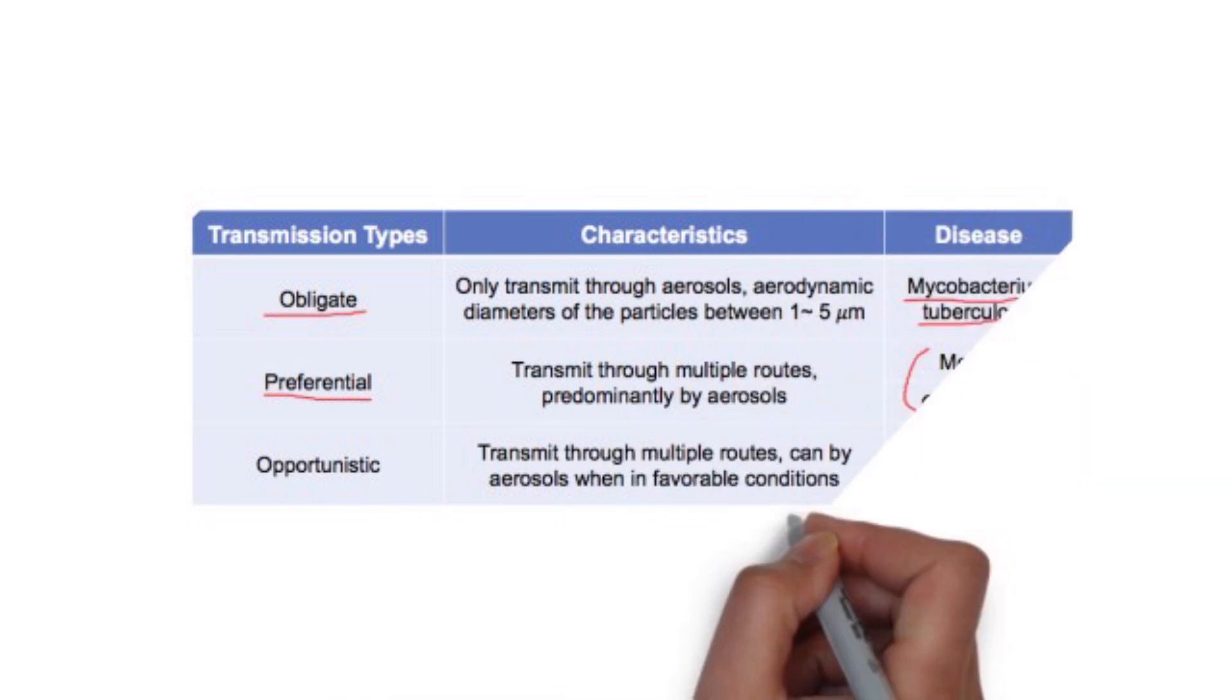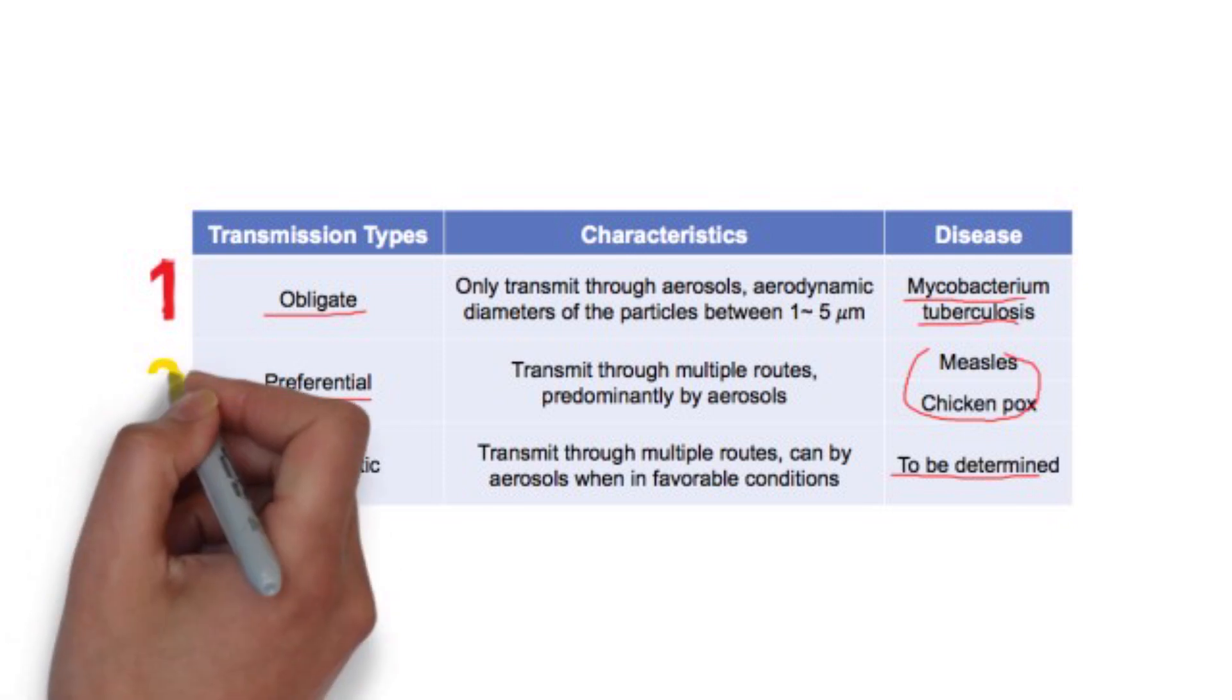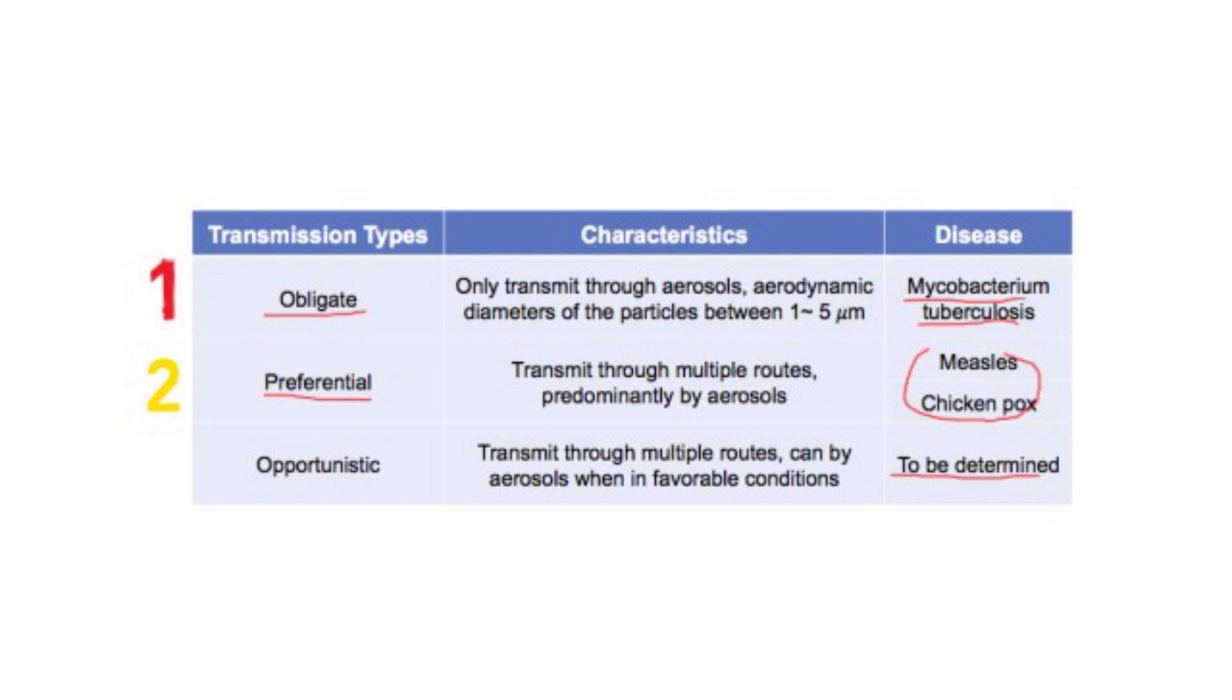There are three types of transmission through small airborne particles. Obligate, preferential, and opportunistic. Obligate is an infection initiated only through aerosols. An example is mycobacterium tuberculosis. Preferential airborne transmission can naturally initiate infection through multiple routes, but is predominantly transmitted by aerosols. These include measles and chickenpox. Opportunistic transmission is that infections can transmit through multiple routes, including by aerosols, but only in favorable environments.